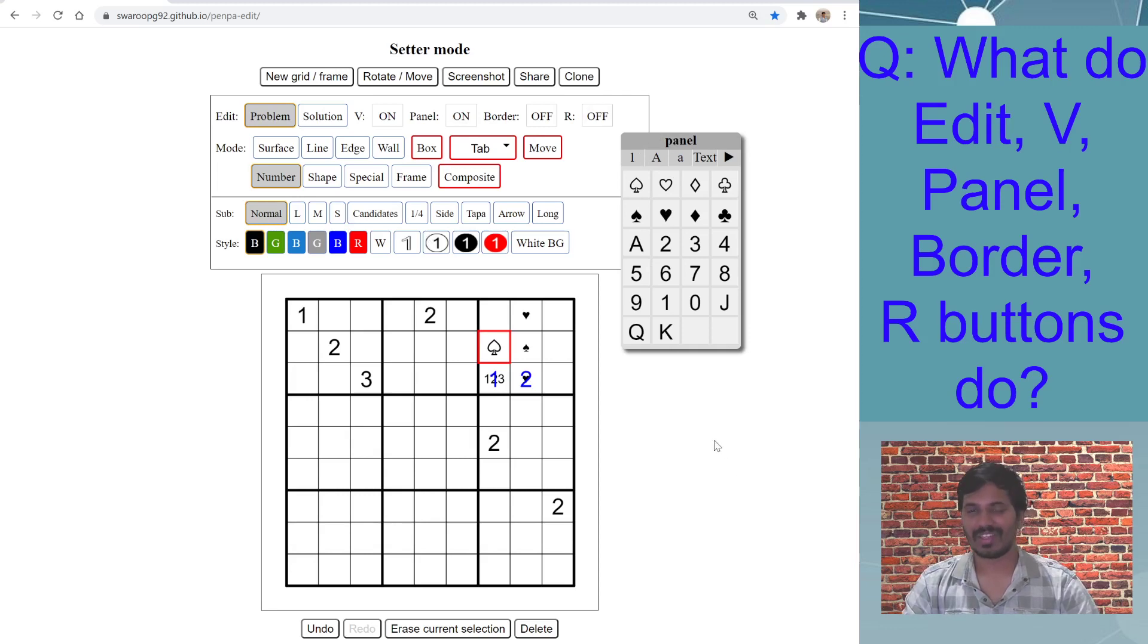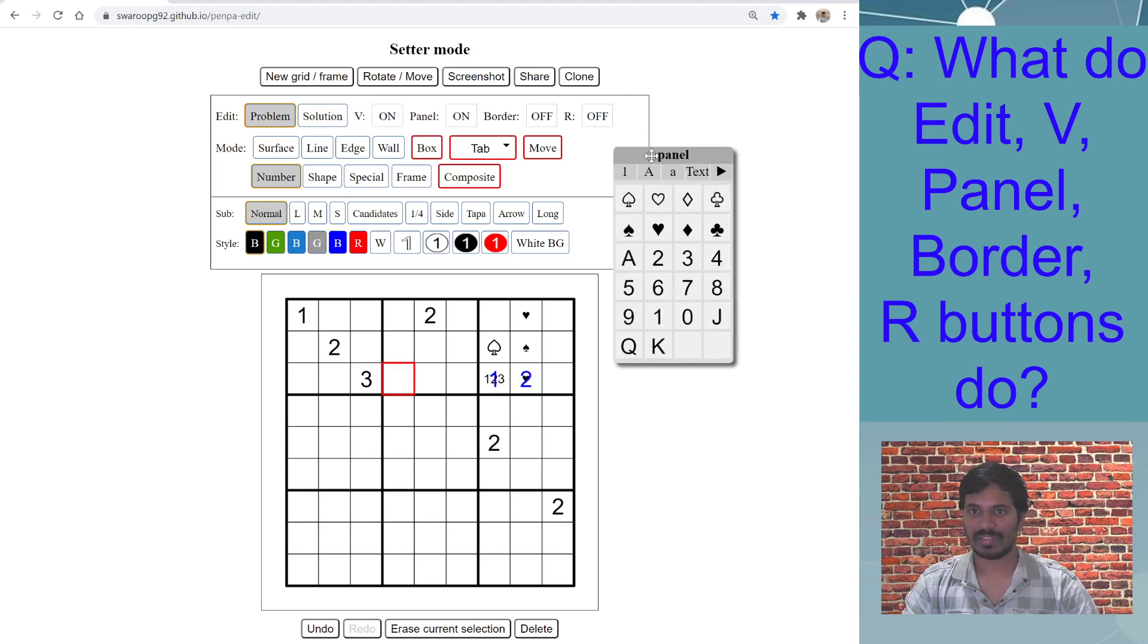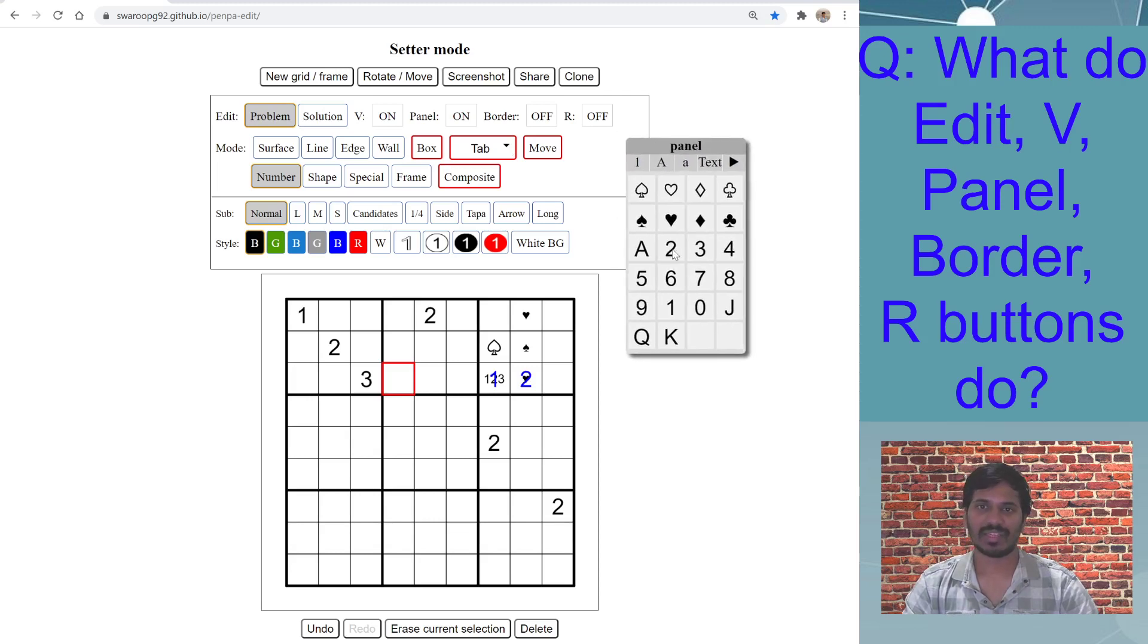So this panel provides you more options in the number mode, and it also allows you to use this whole tool on your mobile. This is mobile friendly as well. On the mobile, you might not be having a keyboard to enter these numbers, so if you want to use this on mobile, you need to hit Panel on, which will display this small window, and then you can select numbers here and insert into the grid.